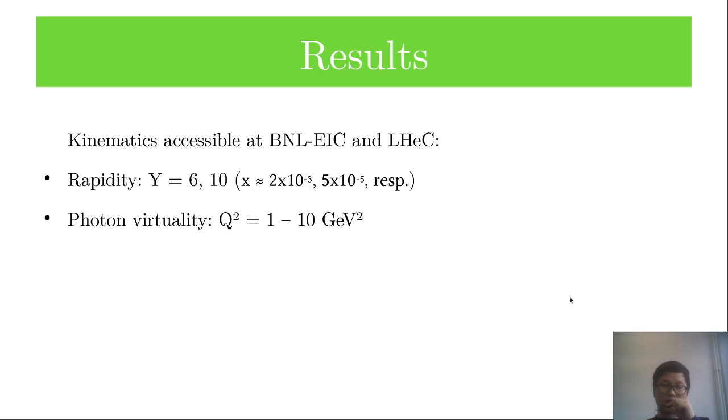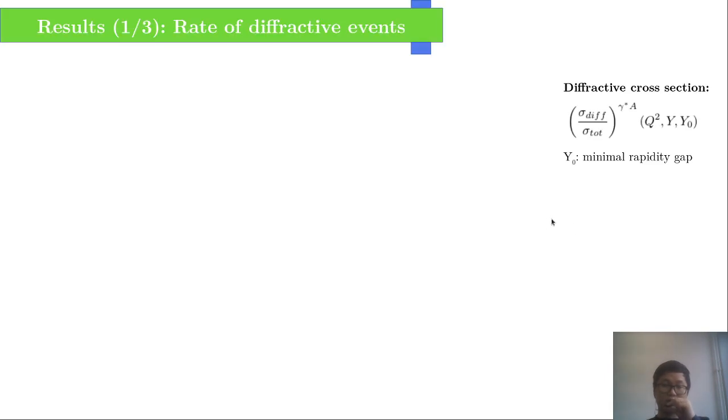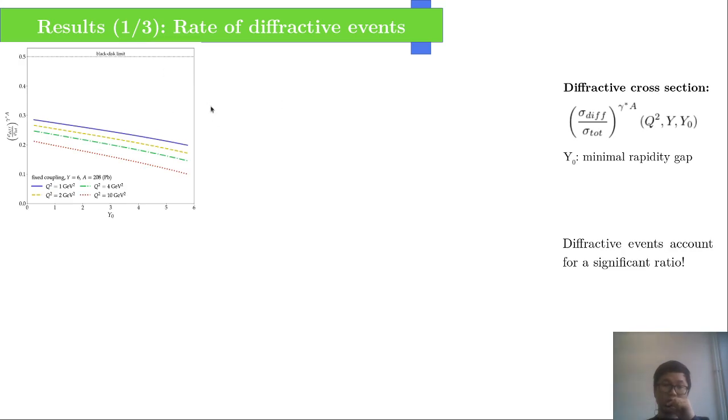Now I will present some results for the kinematics accessible at BNL EIC and LHeC. In the first place, we've got the diffractive cross-section with a minimal gap. We first plot for the case of Y equal to 6, from which we see that diffractive events graph for about 20 to 30 percent.